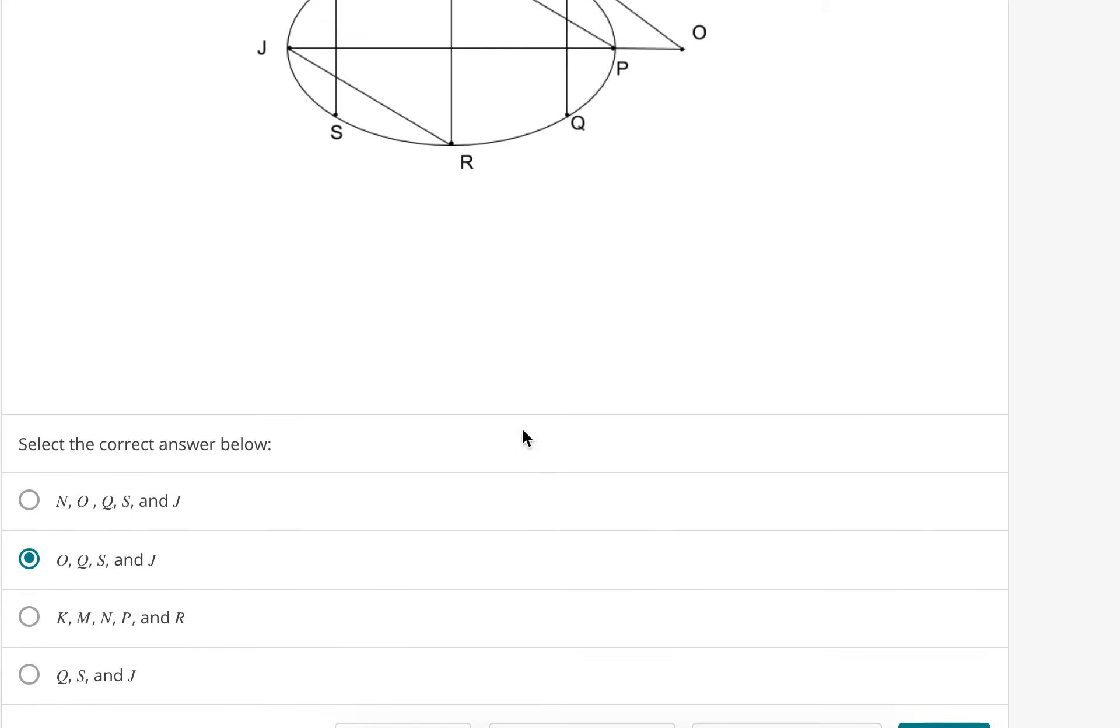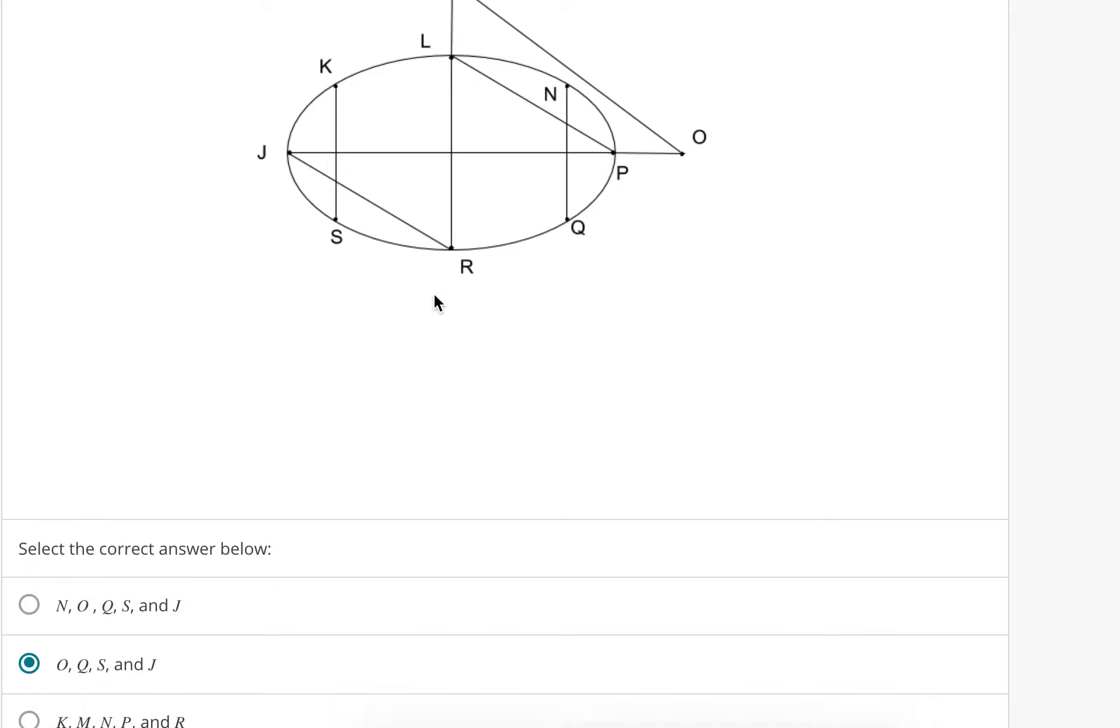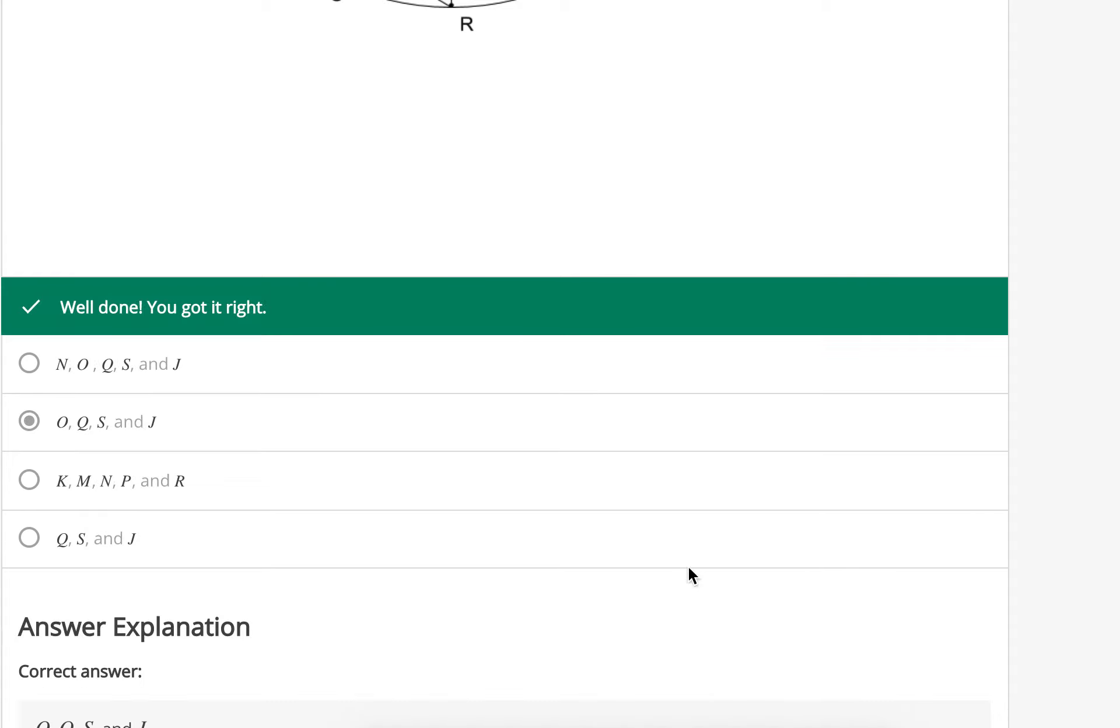All right, so just a quick review. You can't get from L to O with just one edge. You can't get from L to Q with just one edge. You can't get from L to S, and you can't get from L to J with just one edge. So that's why we're selecting those.